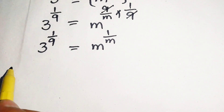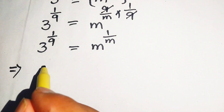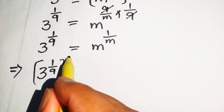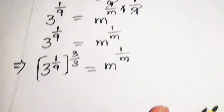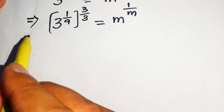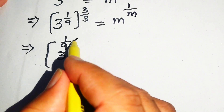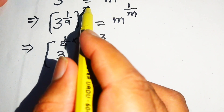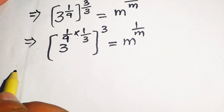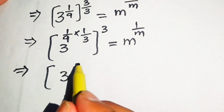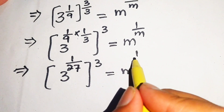To create that condition, we multiply and divide the exponent on the left hand side by 3, writing it as (3^(1/9))^(3/3). Applying the exponential law again, we multiply 1/9 by 1/3, giving 3^(1/27) raised to the power of 3, equals m to the power of 1 over m.